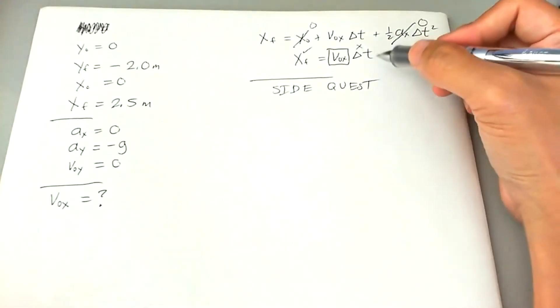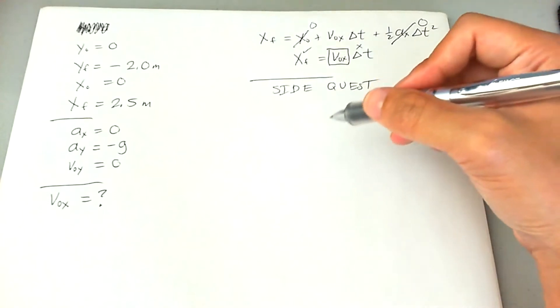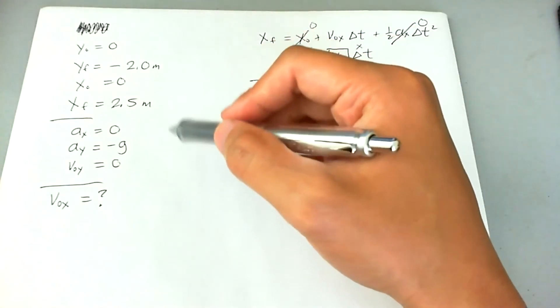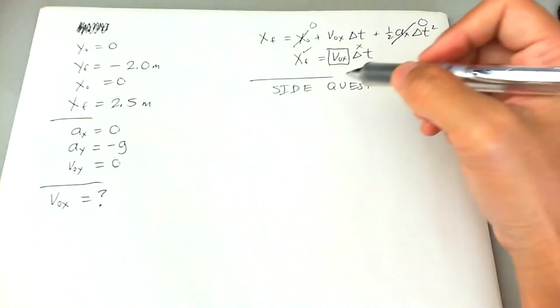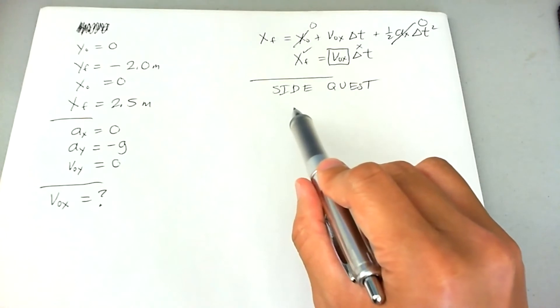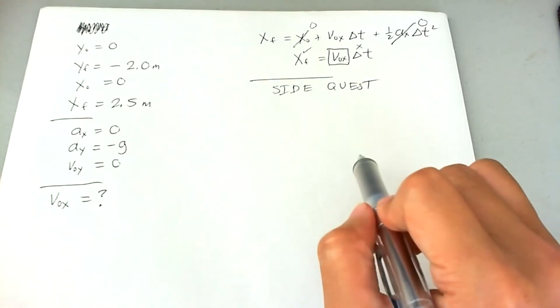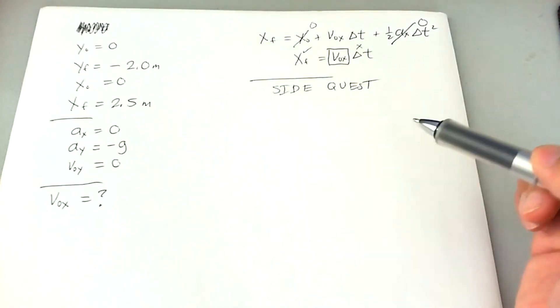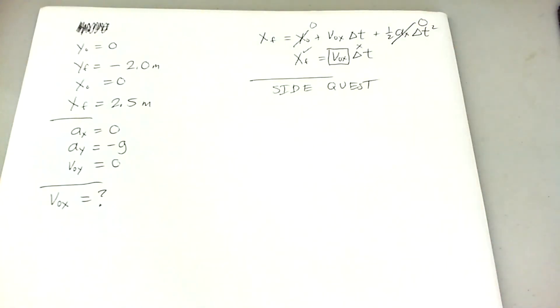All right, so to get delta T again, since delta T is kind of a universal parameter, we can use the Y component. So we know that the stunt devil is going to go from one building to another in a parabolic shape going down, right?